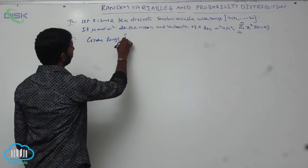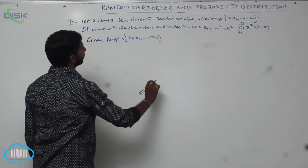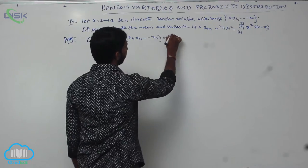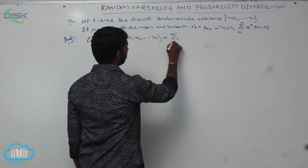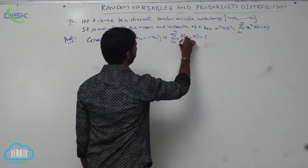Given the range equals the set {x1, x2, ..., xn}, this implies the sum of probabilities equals 1. That is, the sum from i equals 1 to n of P(X = xi) equals 1.